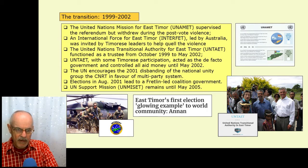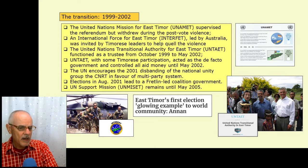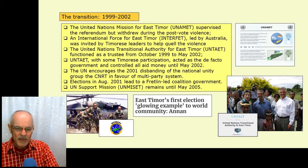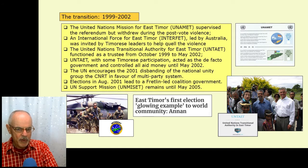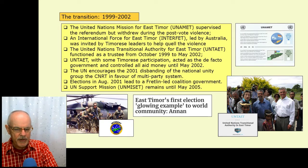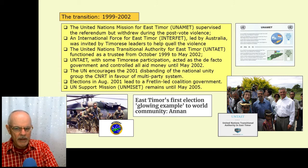This UN body, with some Timorese participation, acted as a de facto government and controlled all of the aid money until May 2002. The UN — that is to say, the big players effectively controlling things — encouraged the disbanding of the national unity group created in 1998, the CNRT, in favour of a multi-party system. There was pressure for the Timorese to disband their organisation of national unity in favour of a divided multi-party system, seen as a Western model of representative democracy. Elections were held in August 2001, leading to a Fretilin-led coalition government.